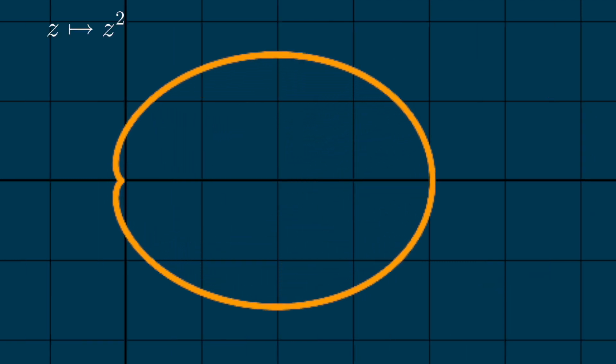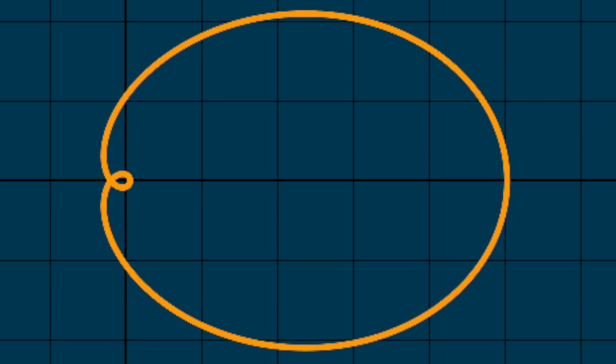What happens if we square it again? We don't get an ellipse anymore, so there's something special about squaring our ellipse centered at the origin.